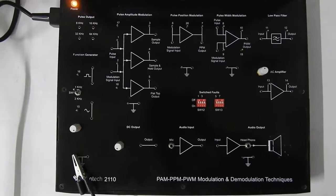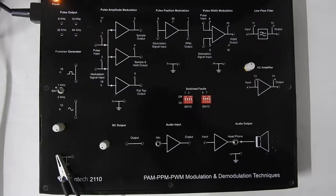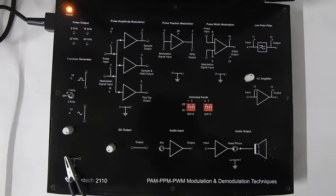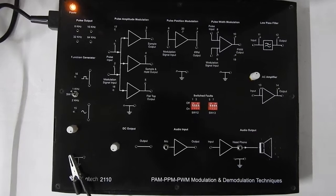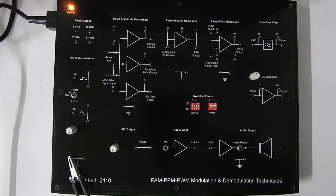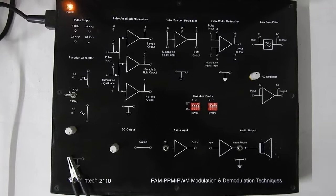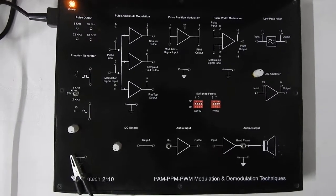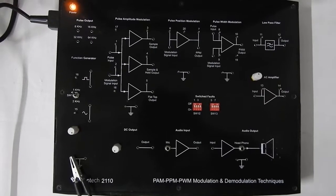Now let us see Pulse Amplitude Modulation, Pulse Width Modulation and Pulse Position Modulation. We know that for any kind of modulation, you need two important signals: one is the carrier signal and another is the modulating signal.